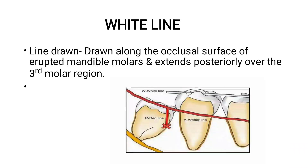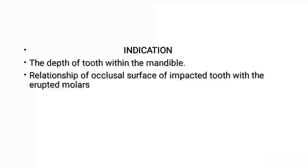What is white line? White line is drawn along the occlusal surface of erupted molars, extending posteriorly to the third molar region. You can see over this diagram — a line drawn along the occlusal surface extending posteriorly over the third molar. The white line indicates the depth of the tooth within the mandible and the relationship of the occlusal surface of the impacted tooth with the erupted molars.